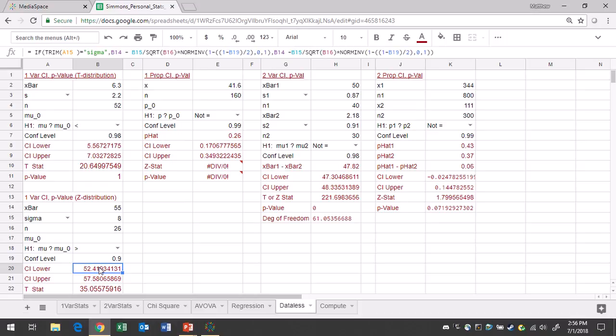This gives me a confidence interval with a lower limit of 52.419 and upper limit of 57.581, all rounded to three decimal places.